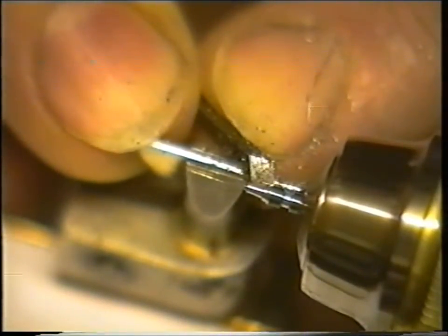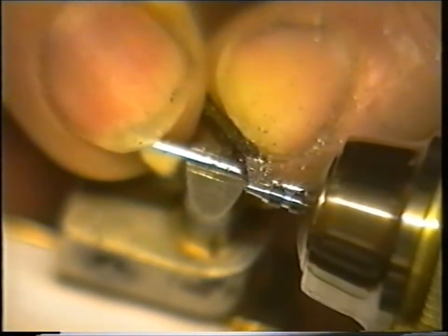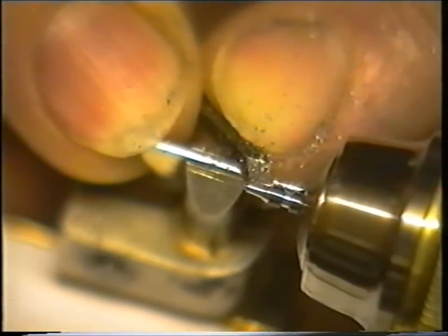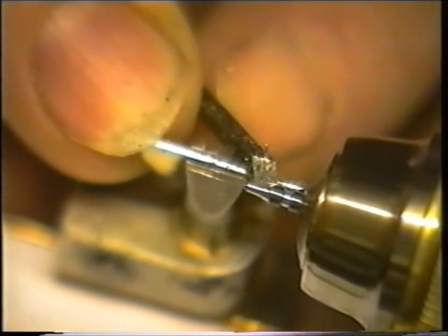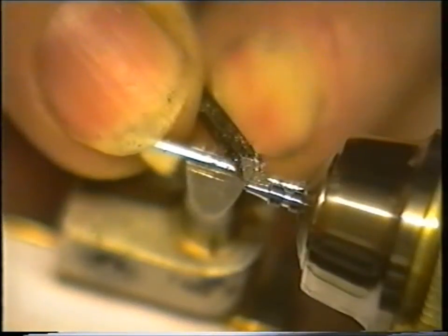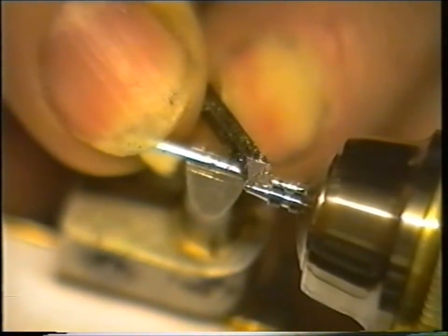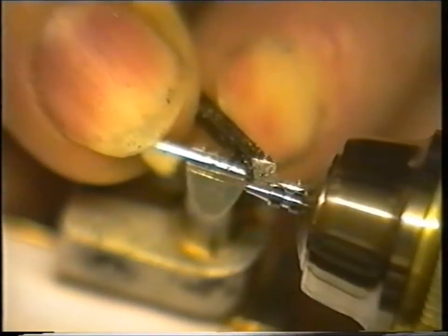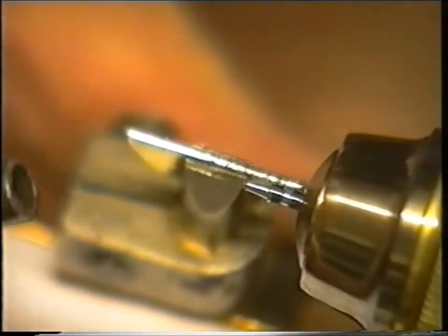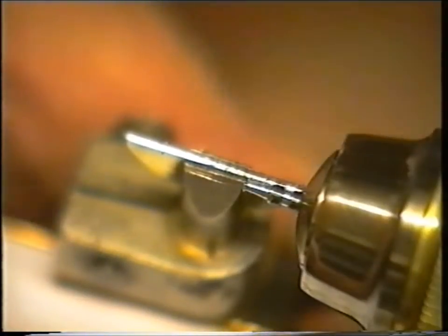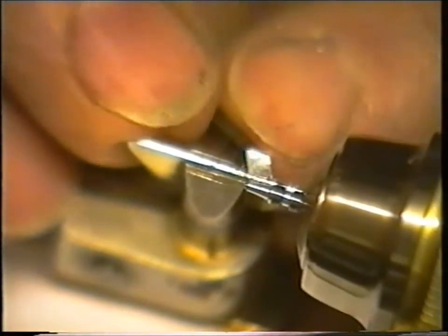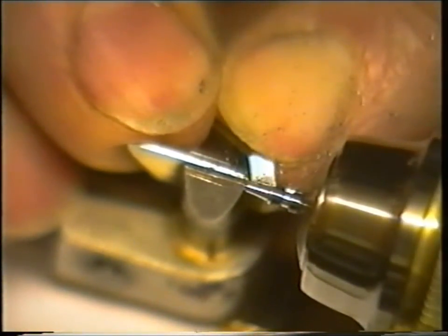When you come to a slim watch where the clearances are very close, you've got that bit of latitude to end up with the wheel clearing the center wheel nicely and not touching the pallet cock.